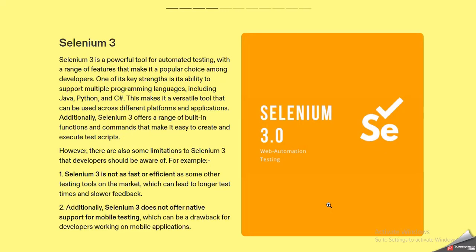Coming to the next point, you can explain what is Selenium 3. Selenium 3 is a powerful tool for automated testing and it comes with a variety of features. One of its strengths is the ability to support multiple languages like Java, Python, C#, and many more, making it a versatile tool that can be used across different platforms and applications. Additionally, Selenium 3 offers a range of built-in functions and commands that make it easy to create and execute scripts.